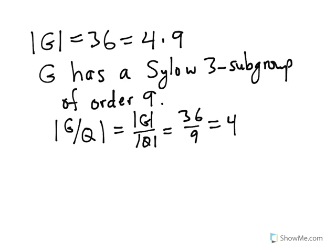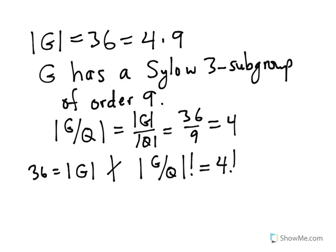But now we know that the order of the group, which is 36, does not divide the order of G mod Q factorial, which is 4 factorial or 24. And therefore, automatically, G is not simple.